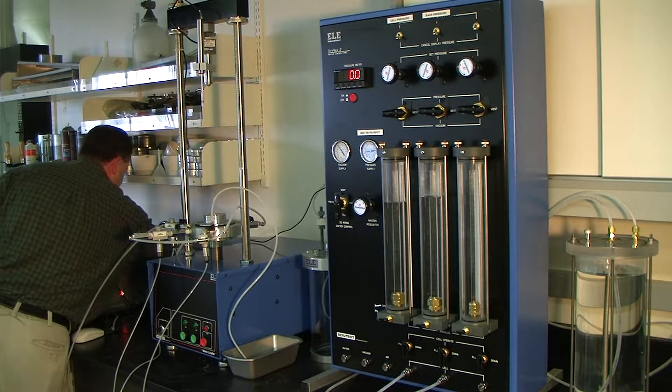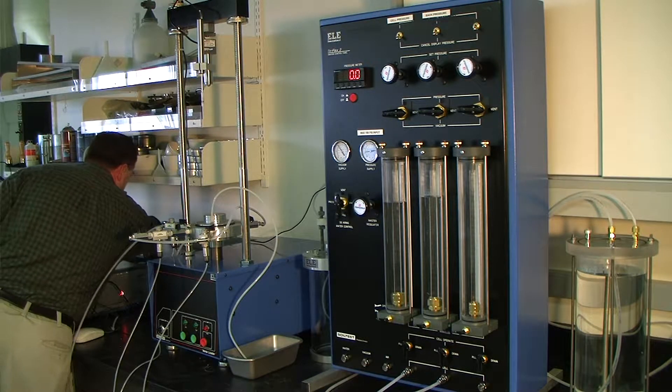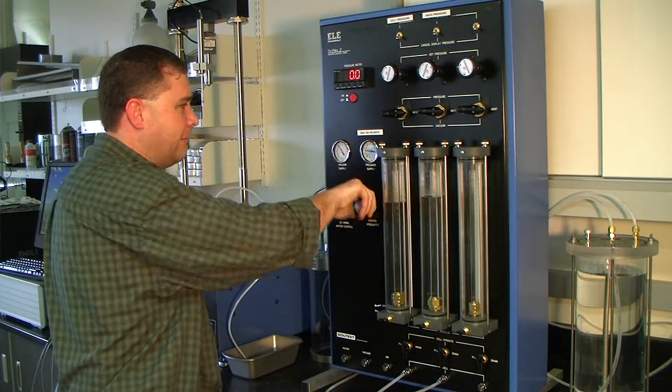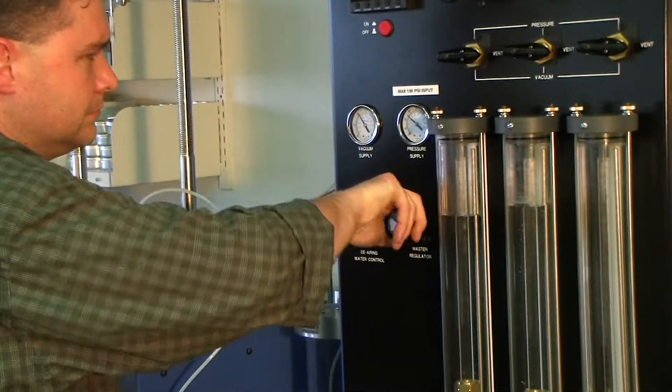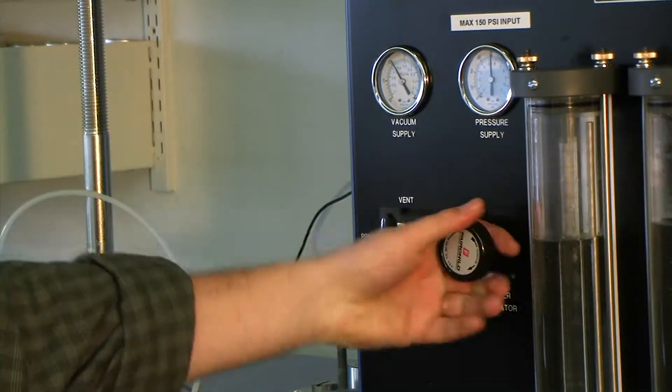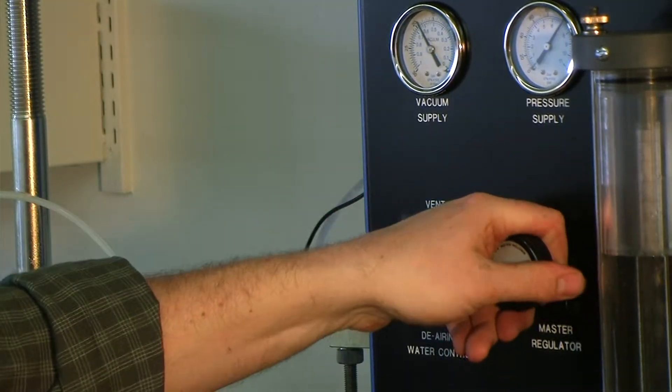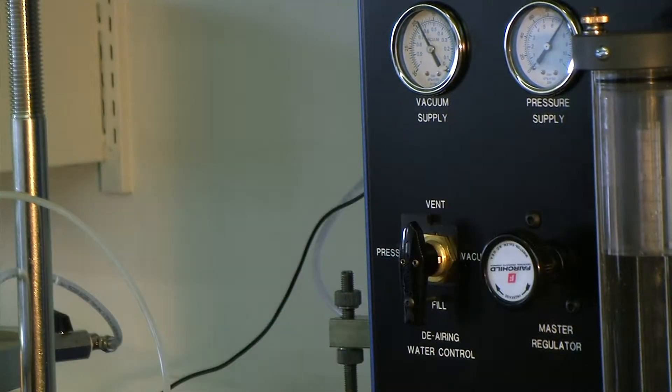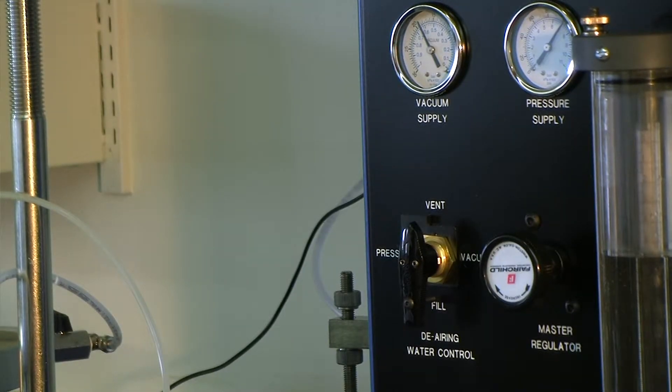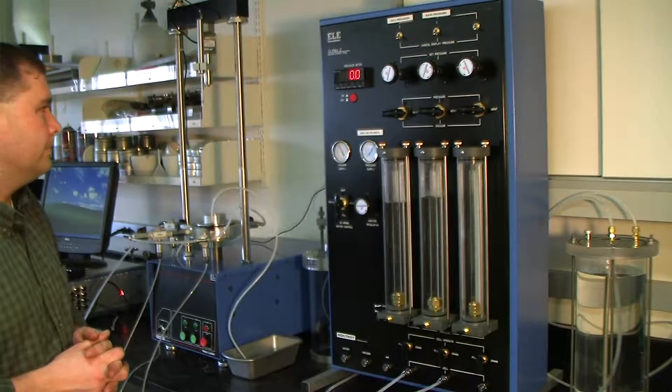Now we'll turn the regulator on and we'll put it up to about 100 PSI. The system itself can handle up to 150 PSI, so that's the maximum pressure input. Typically in triaxial testing, you shouldn't need that much pressure. What you need to have is about 10 to 15 PSI higher than your maximum amount of pressure that you need for testing. So if you only need 50 PSI maximum, you only need to put in 60 or 70 PSI, just to make sure you have enough pressure to complete your test.